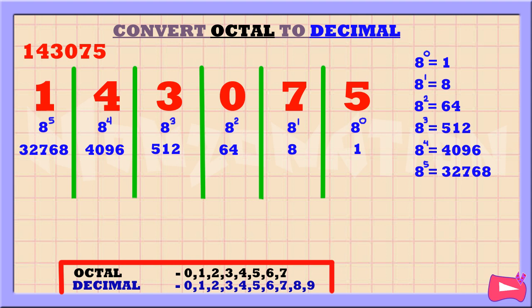1 times 32768 is 32768. Next, 4 times 4096 is 16384. Next, 3 times 512 is 1536. Next, 0 times 64 is 0.